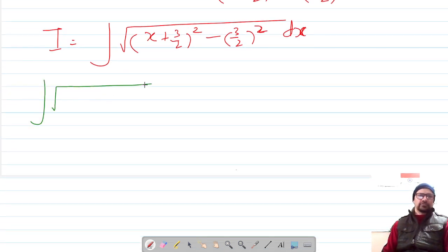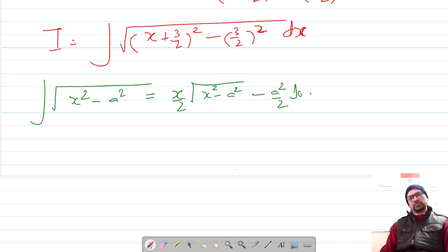Which is x by 2 under root x square minus a square minus a square by 2 log of x plus under root x square plus a square plus c.